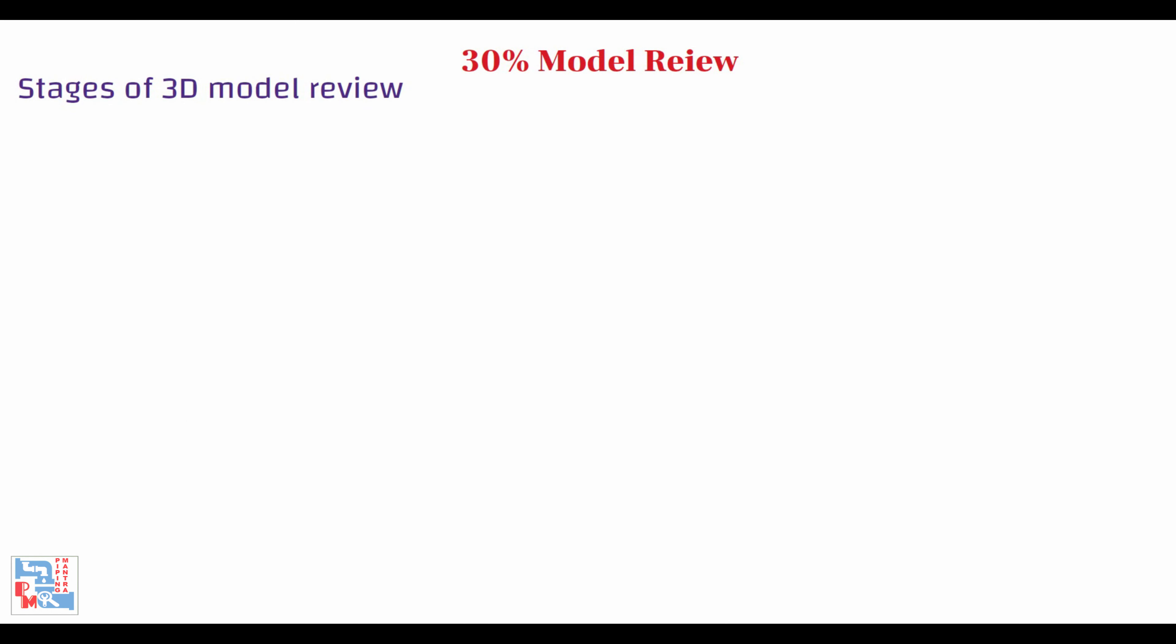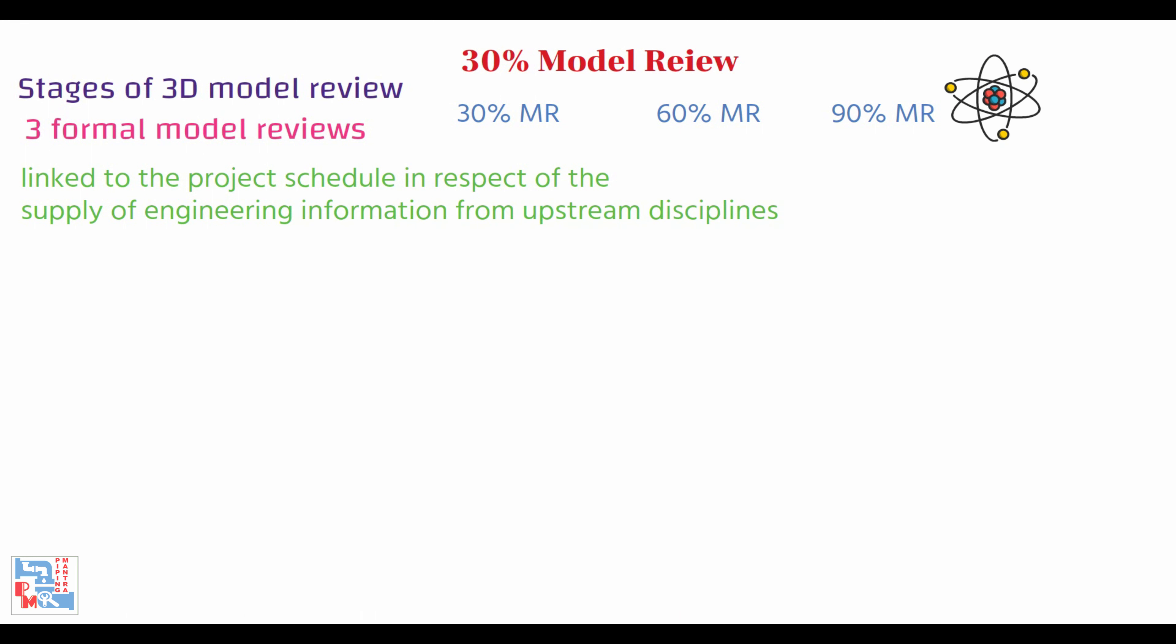It is planned to have three formal model reviews at stages 30%, 60%, and 90% of design completion. These stages are linked to the project schedule in respect of the supply of engineering information from upstream disciplines like process, mechanical, instruments, etc., being at the status of preliminary, intermediate, and final.